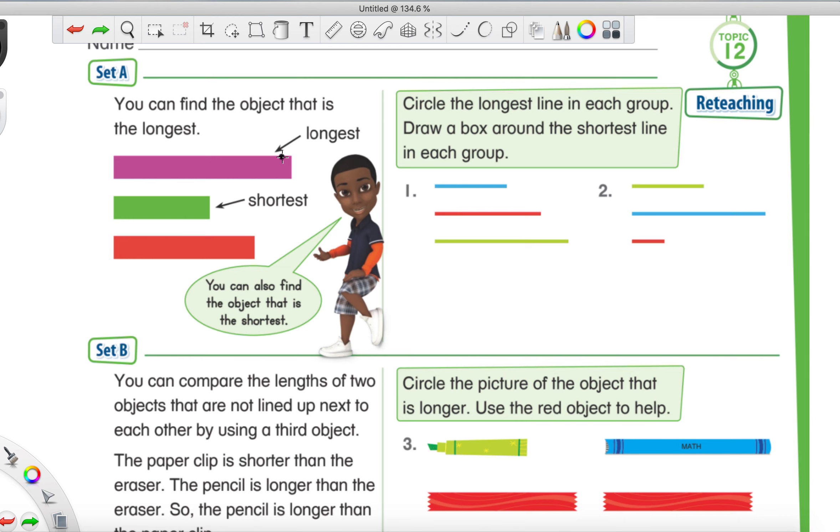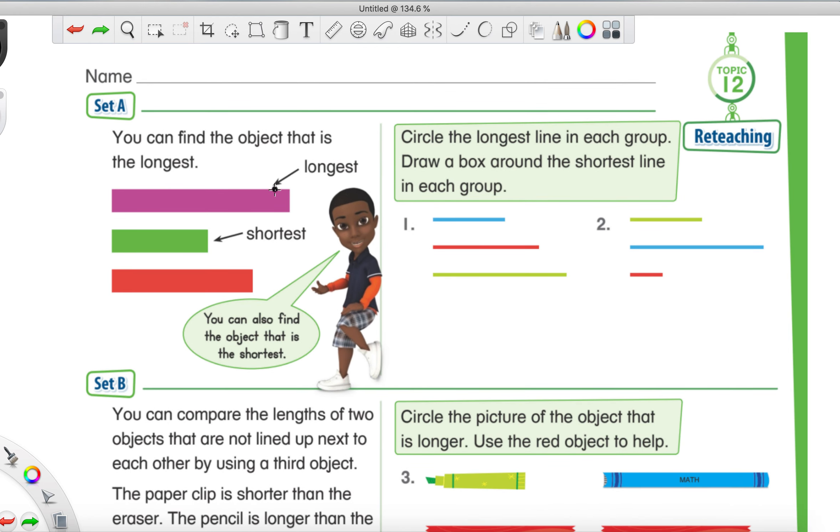This is going to be a pretty quick and easy review because this was not a very difficult unit. So let's start with section A here where we see a whole bunch of different color lines and they just want us to tell which one is the longest and which one is the shortest. I'm going to show you what they want us to do. So what we're going to do is for the longest line, you're going to circle it. You're going to make a circle around the longest line.